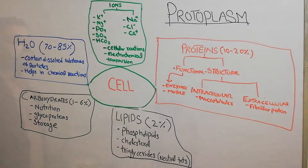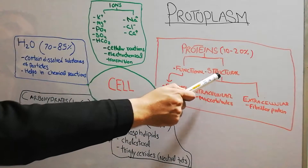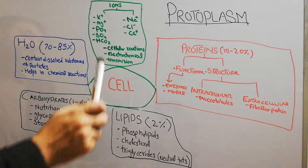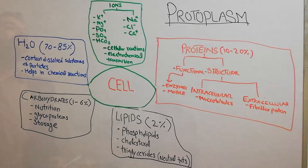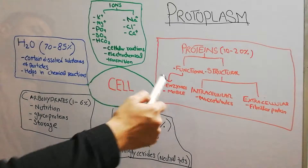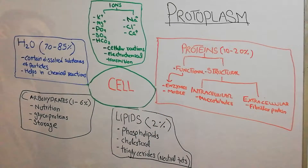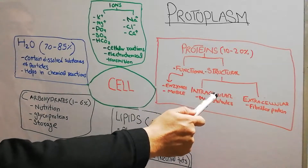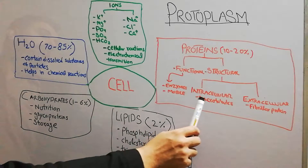We have different types of proteins, but basically they are divided into structural proteins and functional proteins. Structural proteins make up the structures of different organelles and help achieve some functions, while functional proteins basically consist of enzymes.